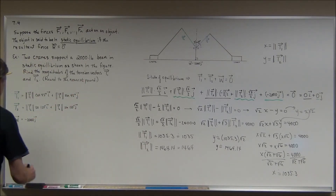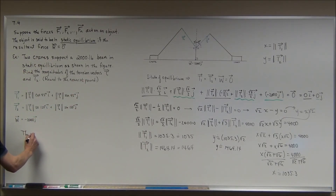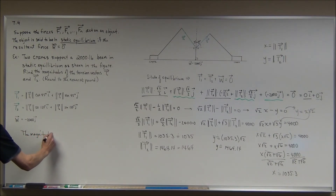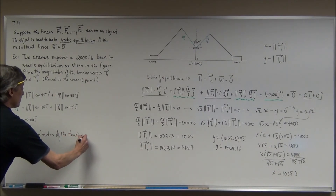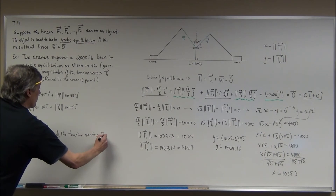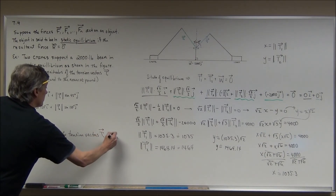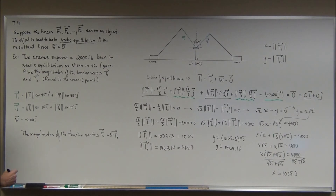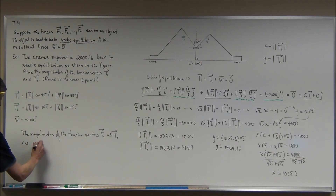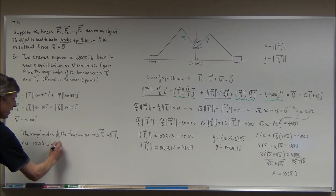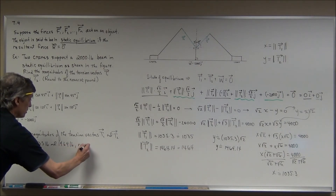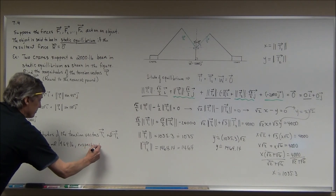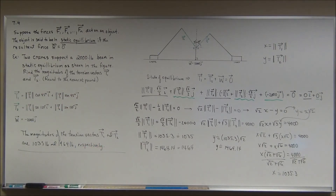Take a second to write it out: the magnitude of the tension vectors T sub 1 and T sub 2 are 1,035 pounds and 1,464 pounds respectively. And that answers the problem.